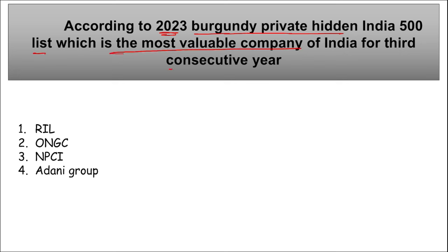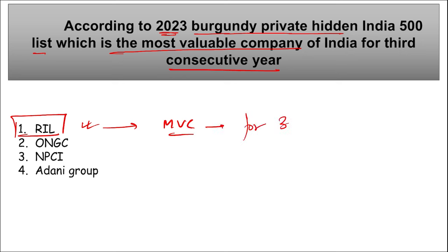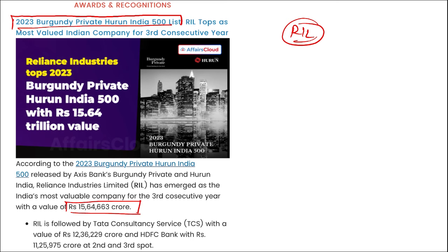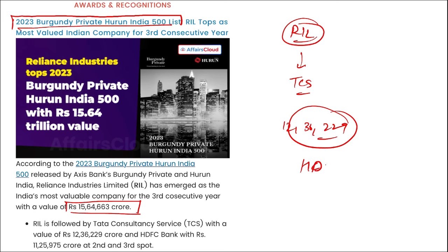According to the 2023 Burgundy Private Hurun India 500 list, Reliance Industries Limited is the most valuable company of India for the third consecutive year. The value of RIL was close to Rs. 15,64,663 crore. RIL was followed by TCS — Tata Consultancy Services — with a value of Rs. 12,36,229 crore, and HDFC Bank on third position. Hurun India was founded in 2012; its founder and chief researcher is Anas Rahman Junet, headquartered in Mumbai.